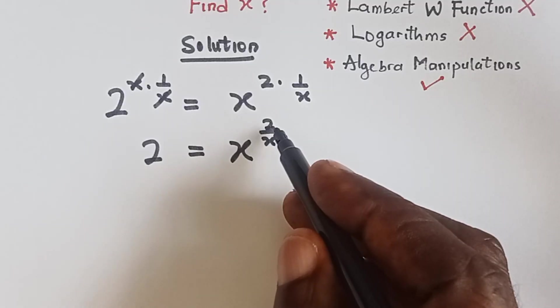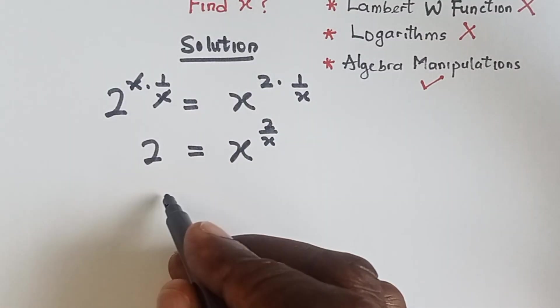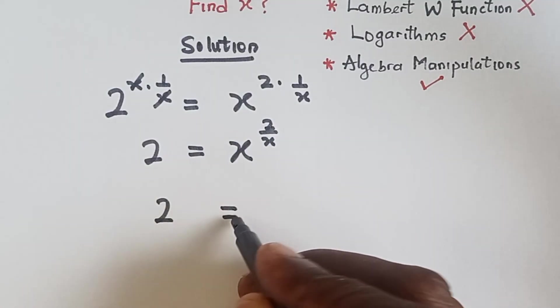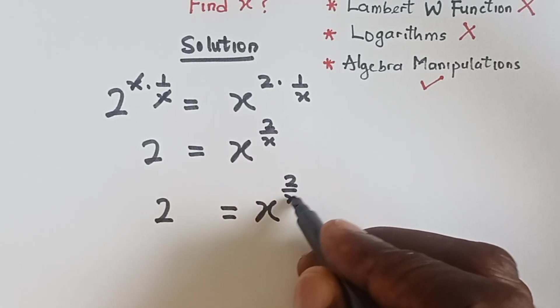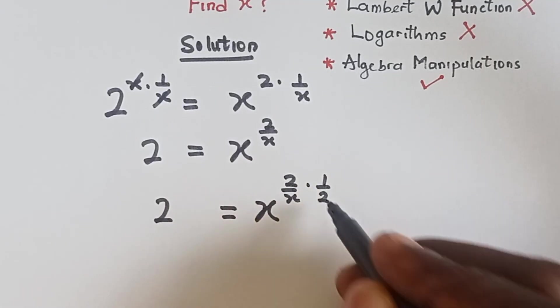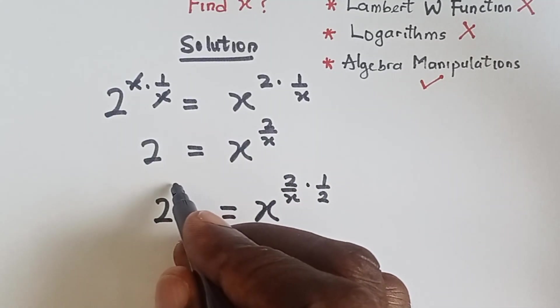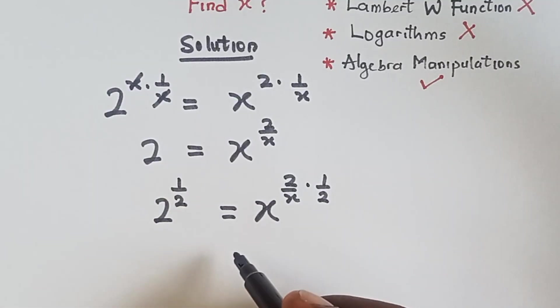now let's find a way to also cancel out this 2 and then what do we do? We are going to multiply the power by 1 over 2 and then whatever we do here, we have to do here too. This is also 1 over 2.